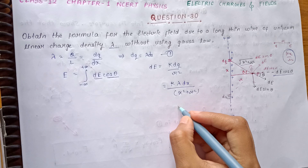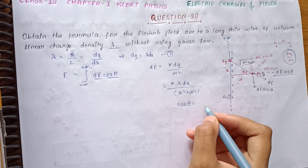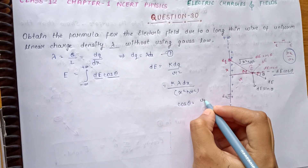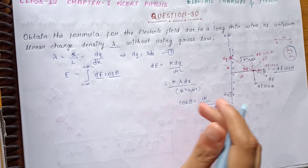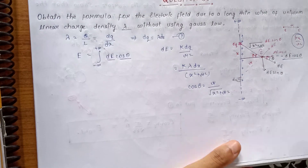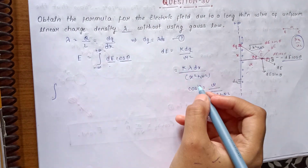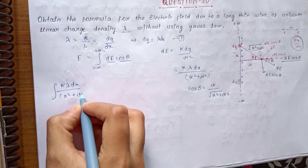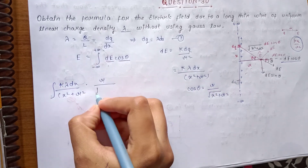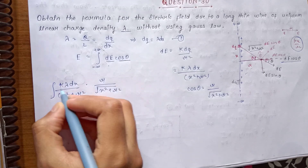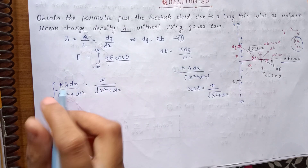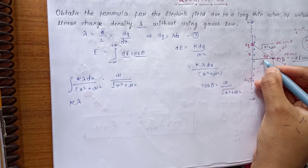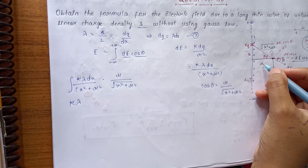Now cosθ — what is cosθ? It is base upon hypotenuse. The base is r and the hypotenuse is √(x² + r²), so cosθ = r / √(x² + r²). We put both these values into our integration: E = ∫ k λ dx / (x² + r²) × r / √(x² + r²). The constants k, λ, and r can be taken outside the integral.